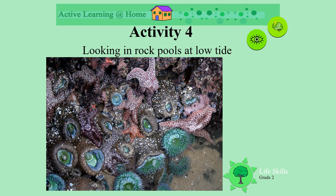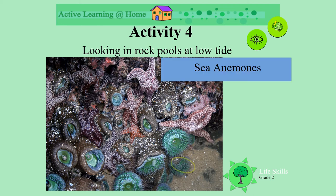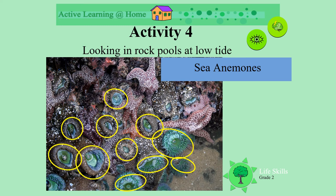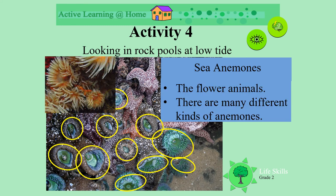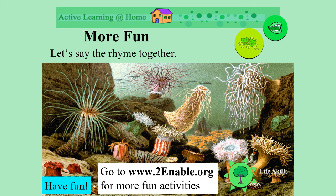When looking in the rock pools at low tide, you might see lots of different creatures. Do you know what sea anemones are? Can you see how many there are in the picture? They are like flower animals with their tentacles moving as the water moves backwards and forwards. There are many different kinds of anemones.